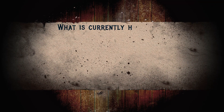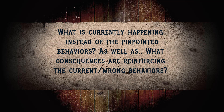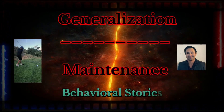Number three, antecedents for the current behavior — we need to ask what is currently happening instead of the pinpointed behaviors, and what antecedents are prompting the current or wrong behaviors. Number four, consequences for the current behaviors — what is currently happening instead of the pinpointed behaviors, and what consequences are reinforcing the current or wrong behaviors.